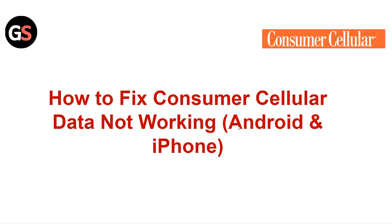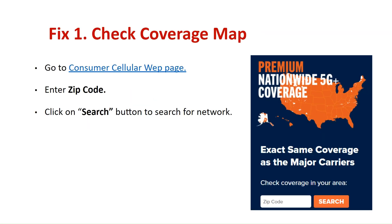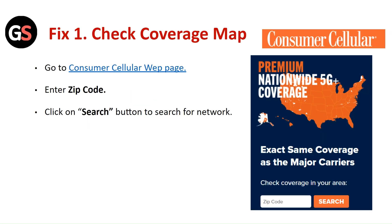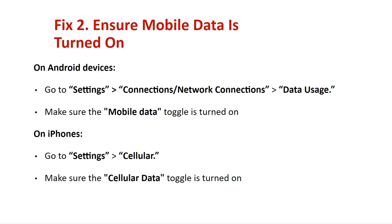Hi everyone. In today's video we will see how to fix Consumer Cellular data not working for Android and iPhone. Fix 1: Check the coverage map. Go to the Consumer Cellular web page, enter the zip code and click on the search button to search for the network.